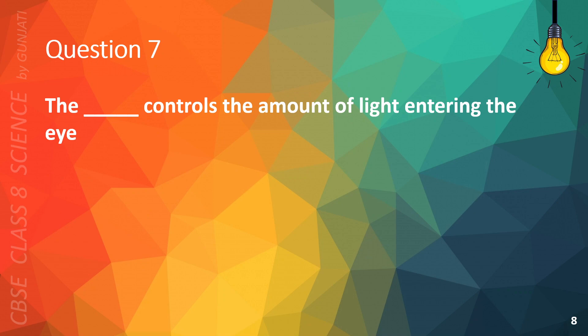Question 7. The blank controls the amount of light entering the eye. A. Iris, B. Retina, C. Cornea, or D. Pupil. The correct answer is A. Iris.